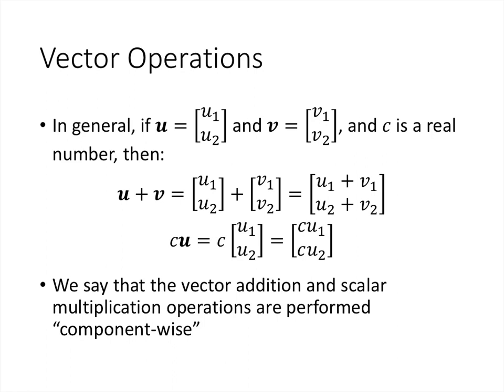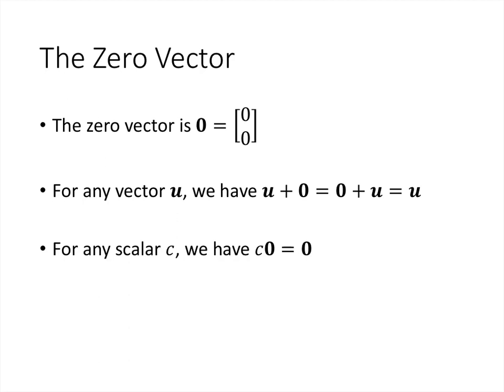So the general definitions here are that if we have a vector u with components u1 and u2 - so the numbers inside the vectors are called components - and a vector v with components v1 and v2, and c is just any real number, then we add the two vectors by simply adding the first components and adding the second components. And we multiply by a scalar simply by multiplying the scalar by each component. And so we say that this operation is component-wise. That means we just do the operation in each component separately and group the answers together into a vector.